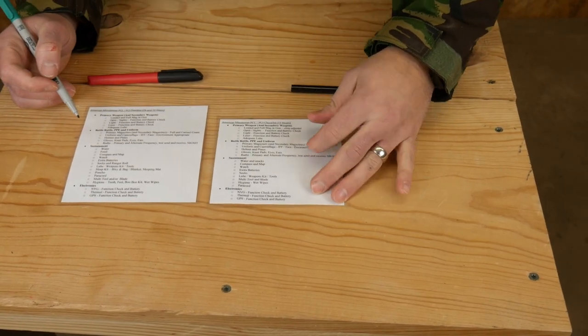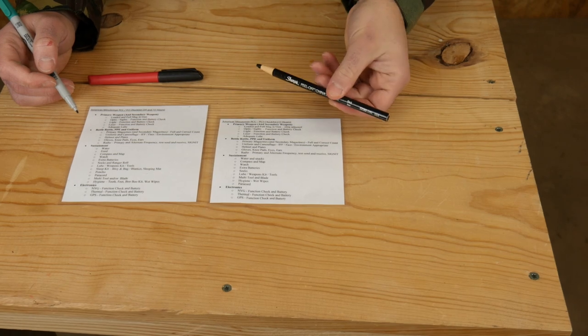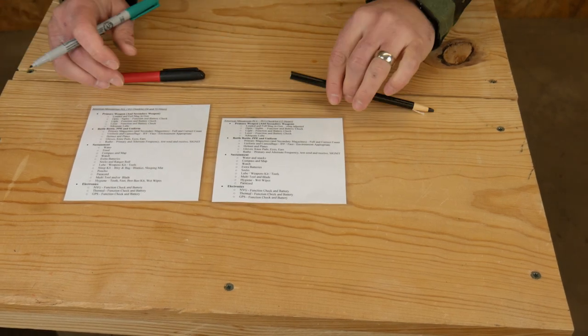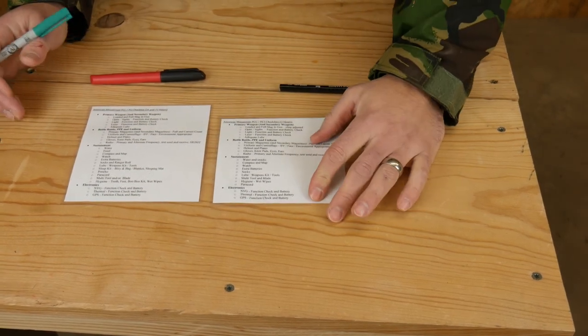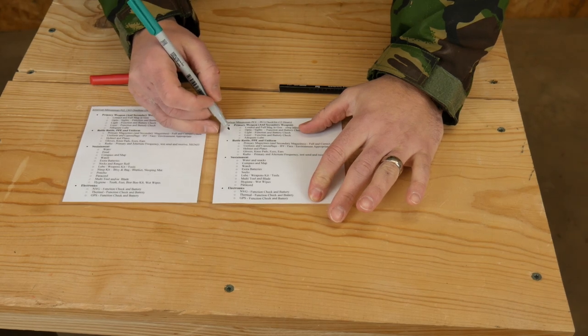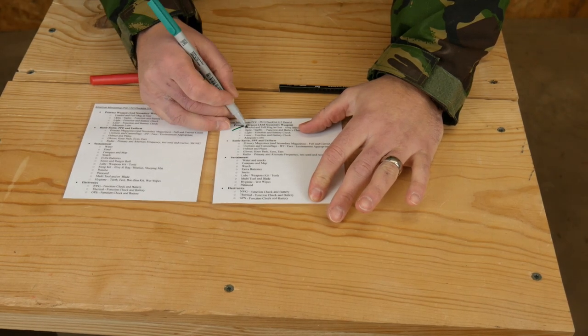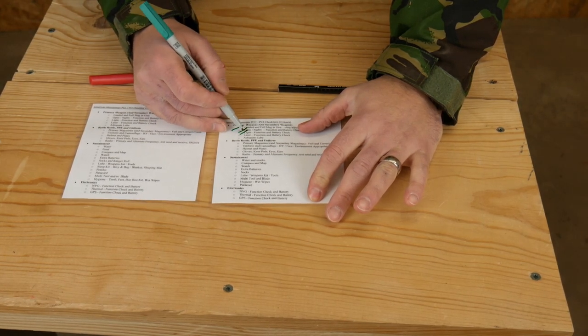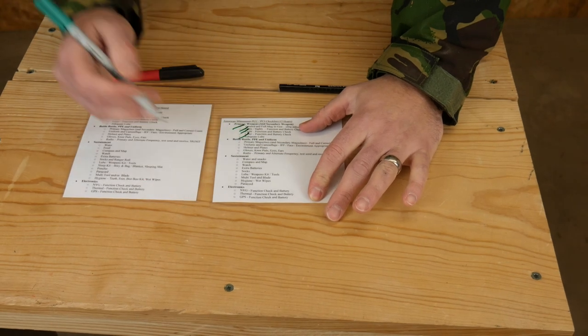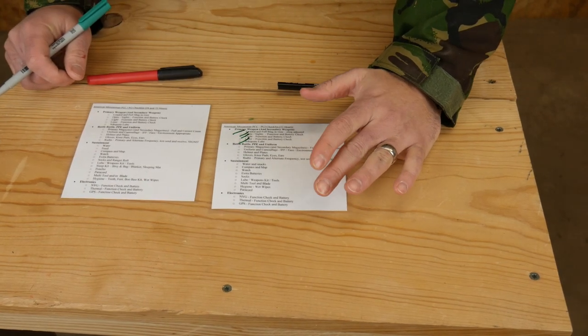So the way I envisioned this being worked is that you would go down the list and either use a grease pencil or maybe a wet erase marker. You could probably use a dry erase marker if you really want, but you would go through and you would check things. So, yep, the weapon's loaded. Yep, there's an optic. Yes, the light works. Yes, the laser works, etc. And you can go all the way down the list.